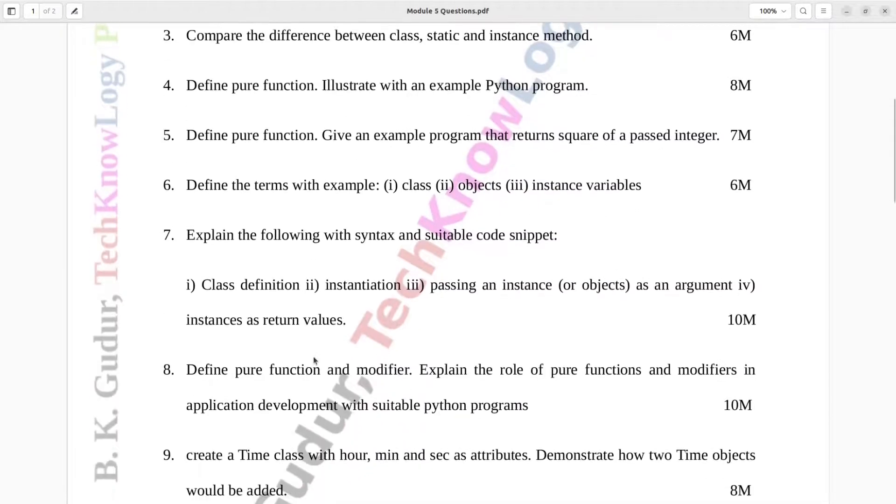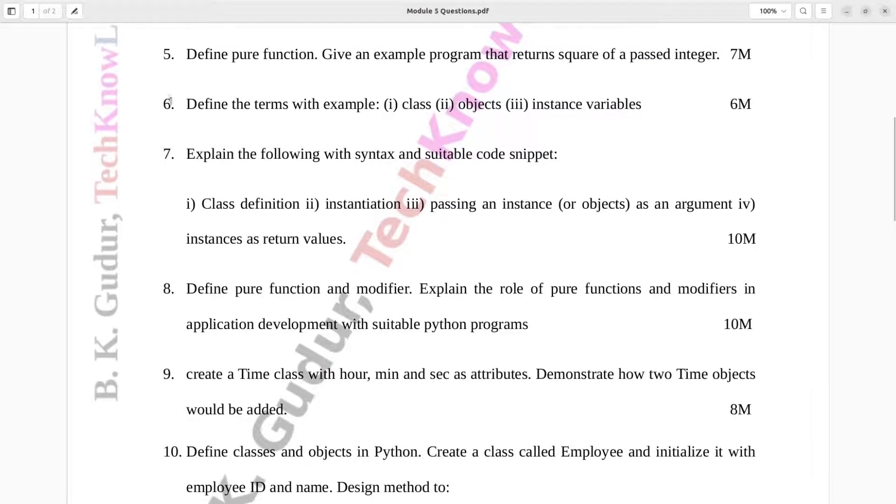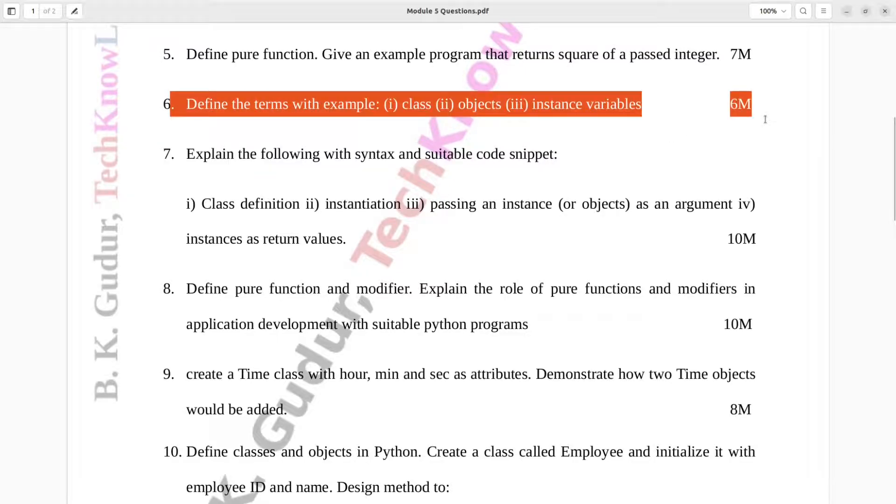Question number six. Define the terms with example: one class, two objects, three instance variables. Six marks.